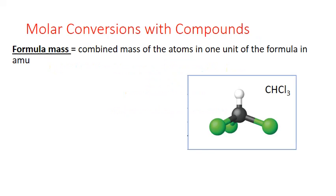In order to do these conversions with compounds, we do have to introduce a new concept: formula mass. Formula mass is simply the combined mass of the atoms in one unit of the formula. It's in units of AMU, the same as the average atomic masses from the periodic table that we use in the calculation.